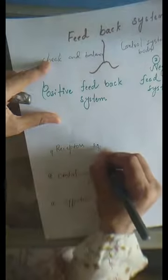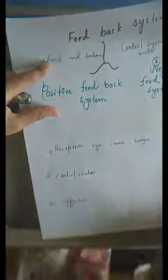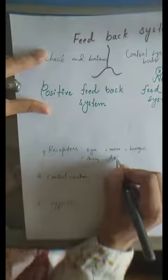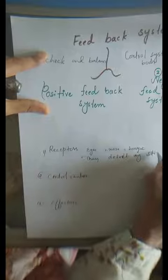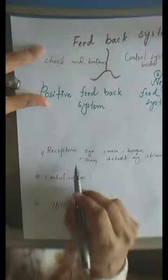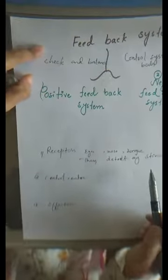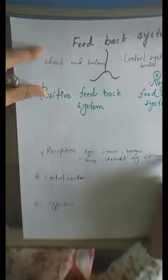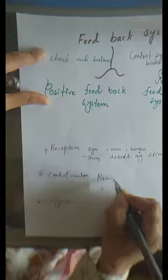Receptors include our eyes, nose, and tongue — there are so many kinds of receptors in our body. The function of receptors is to detect any stimuli present in our environment. The environment's information is detected by receptors. A stimulus is a change from the environment, and this information goes to our control center, which is the brain.